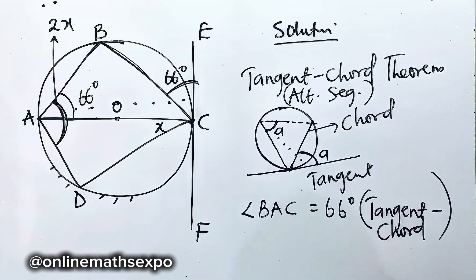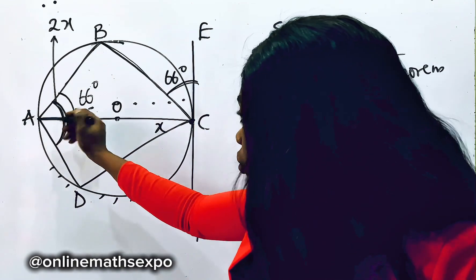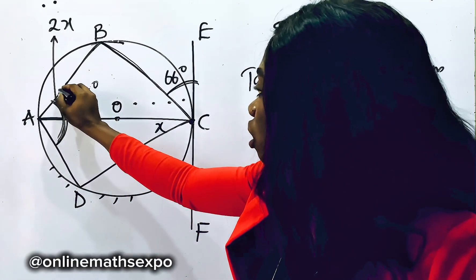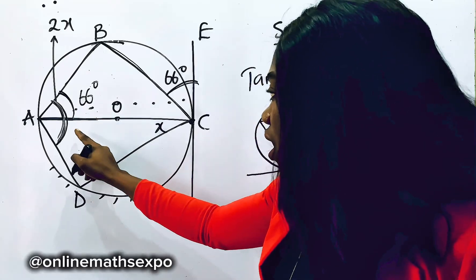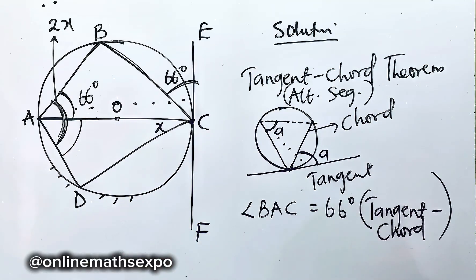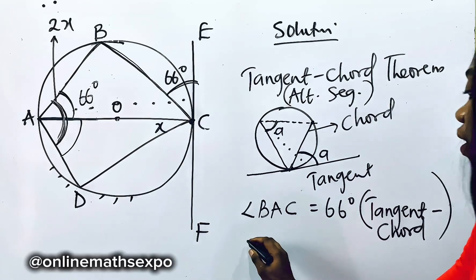So having gotten that, we now remember what the question says. The whole of this angle is 2x. And if here is 2x and one part is now 66, can we get the remaining angle here? Yes. And what do you do?